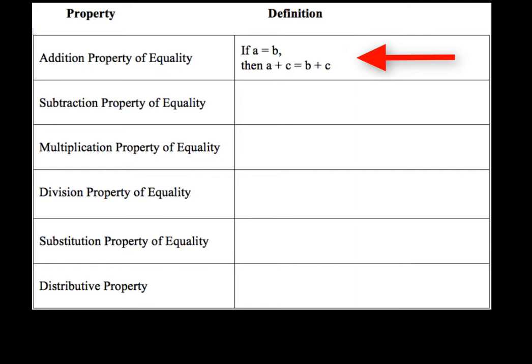Really, what you're doing is you're just adding the same number to both sides of an equation. Similar to that is the subtraction property of equality, and in the subtraction property of equality, that just says if A equals B, then A minus C equals B minus C. So again, you just subtract the same number from both sides of an equation.